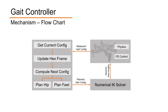Let me begin with a flowchart of our process loop. In each simulation frame, we begin from the measurement of the current state. From there, we update the hex frame, which will be explained in subsequent slides, and finally compute the desired next state. The numerical IK solver solves for each of the 18 joint angles, which are then achieved using a PD controller.